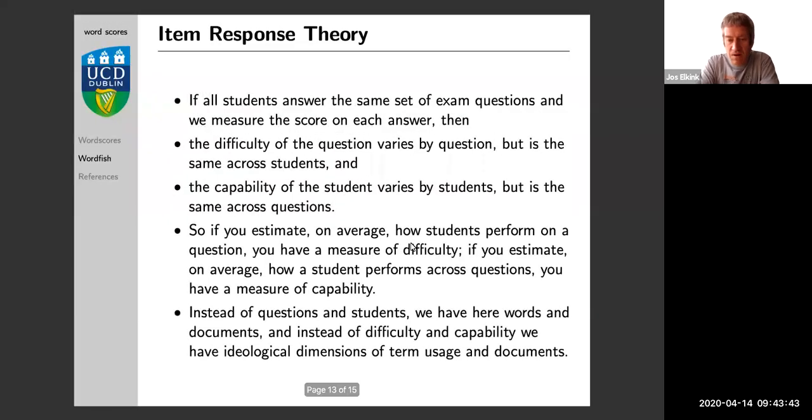Now, we can also make a parallel. So let's think not of questions and students, but words and documents. And we don't think of difficulty and ability, but we think of the ideological position of the dimension and the word usage in the documents. So we can do a similar kind of analysis where we look at the association between the words and the documents to find the underlying ideological dimension across the documents, similar to how we find the underlying difficulty across questions.